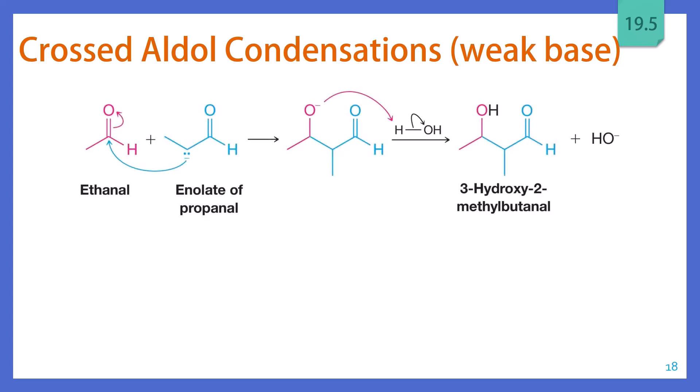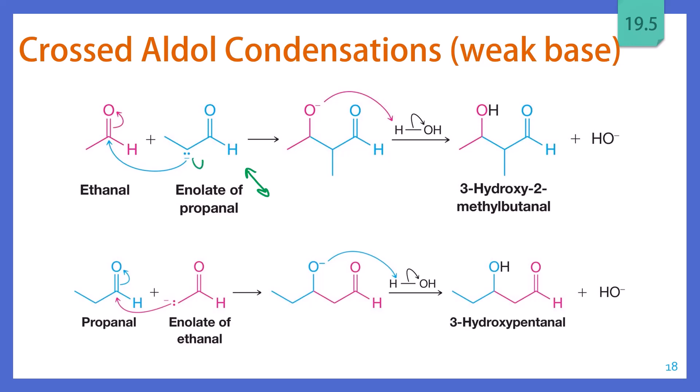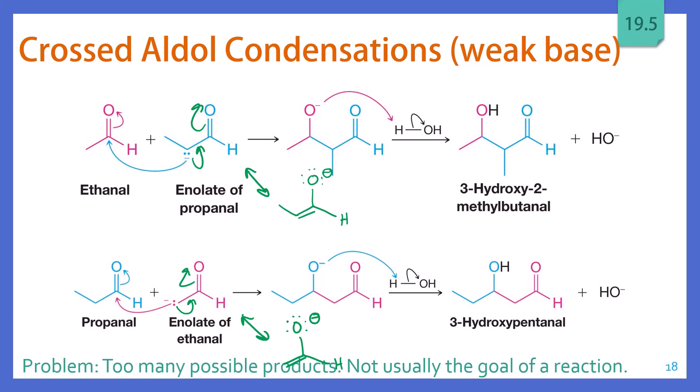So the issue with this reaction is just that there are too many possibilities. When we react with a weak base, that doesn't necessarily favor one enolate over the other. We can form an enolate from propanol or from ethanol. The enolate of propanol has one thing favoring it, which is that the resonance form shows us a more substituted alkene versus the enolate of ethanol. However, ethanol has the benefit of not having as much steric hindrance on its alpha carbon, so it also has a pretty good chance of forming. So this gives us way too many possible products. That's not usually the goal of a synthesis reaction.